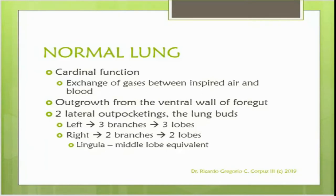Regarding embryology, the lung is an outgrowth from the ventral wall of the foregut. There are two lateral outpocketings — the lung buds. The left has three branches, therefore there are three lobes, and the right has two branches and two lobes. The lingula is the middle lobe equivalent in the left lung.